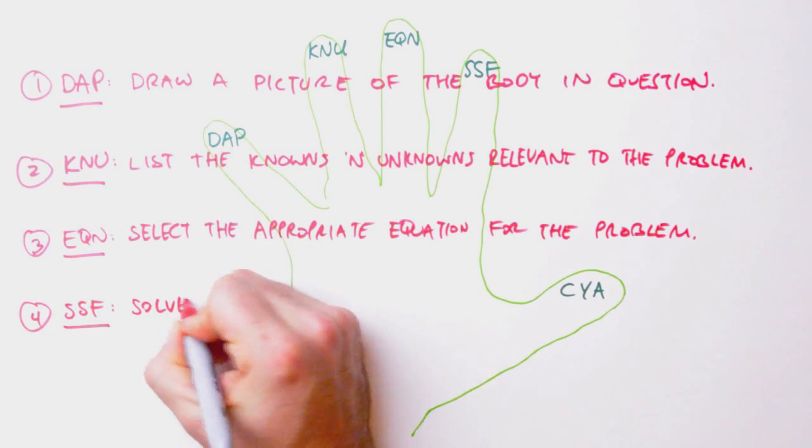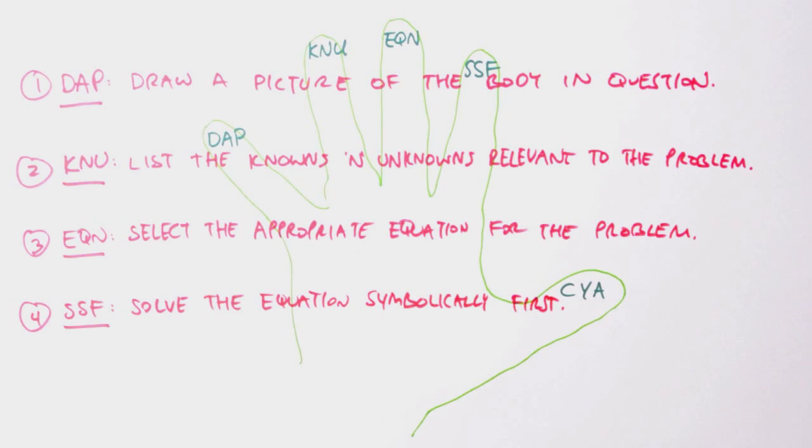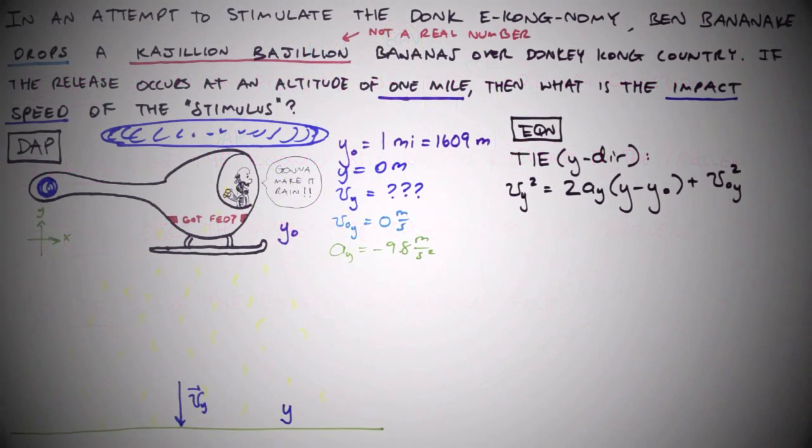Step 4. Solve the equation symbolically first. Numerical values should only be inserted once the equation has been solved for the unknown.